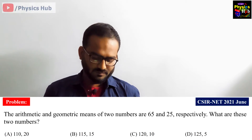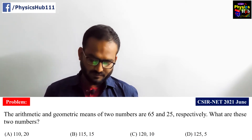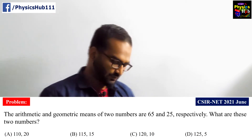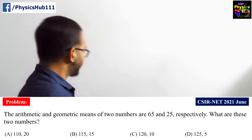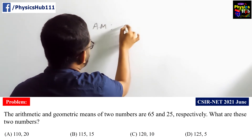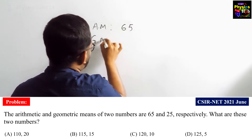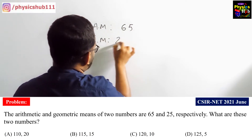Let us solve another problem from CSI NET June 2020 examination. This is from the general aptitude section. The arithmetic mean of two numbers is given as 65 and the geometric mean is given as 25.